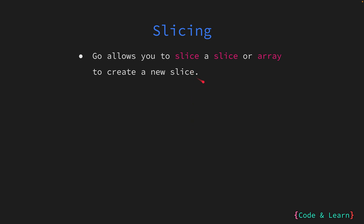Go allows you to create a slice from an existing slice or an array using the slice expression. This also allows us to break the gap between an array and a slice in Go, since you can use the slice expression to derive a slice from an array. To create a slice from a slice or an array we use the slice expression, which is square brackets with a range of indices separated by a colon. An expression in programming is something that can be evaluated to a value — here a slice expression yields the slice value.